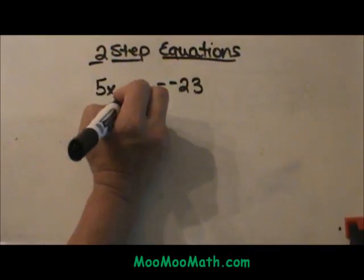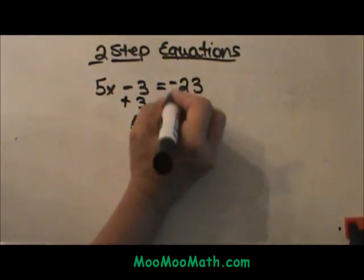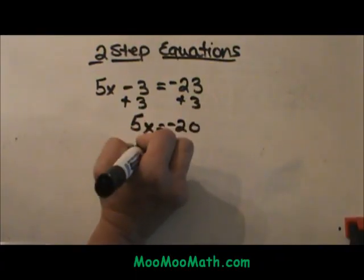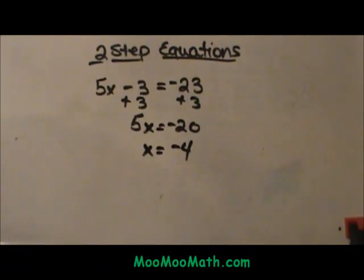Here is the problem in fast motion. Add three to both sides. 5x is equal to negative 20. So x is equal to negative 4. There is our example and negative 4 is the answer.